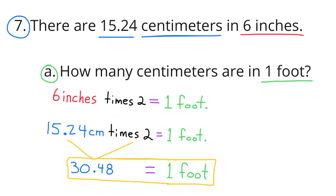Number 7. There are 15 and 24 hundredths centimeters in 6 inches. A: How many centimeters are in 1 foot? Since 6 inches times 2 equals 1 foot, we multiply 15 and 24 hundredths centimeters by 2, giving 30 and 48 hundredths centimeters in 1 foot — just less than 30 and a half centimeters.